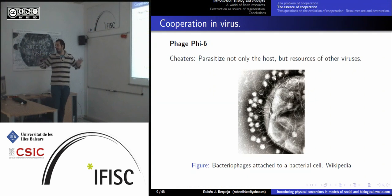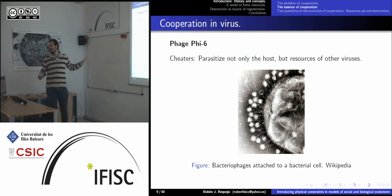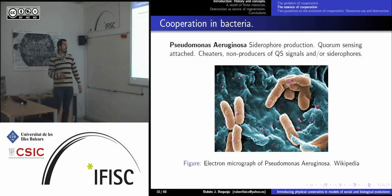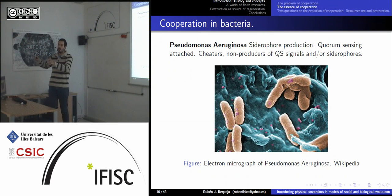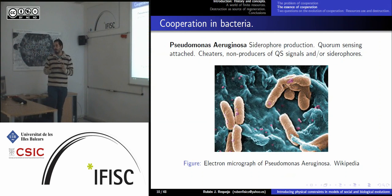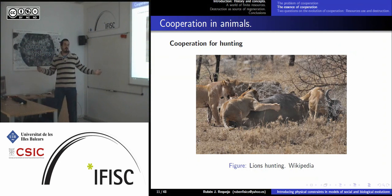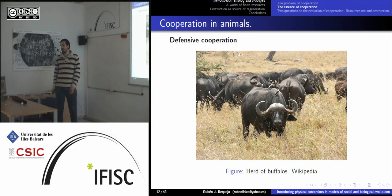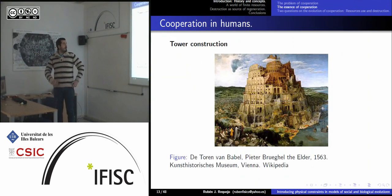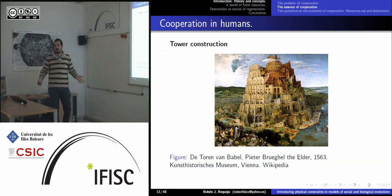Cooperation can be found at all levels of biological evolution — even in viruses, which cooperate or not to parasitize host cells; in bacteria, which cooperate to process external food; in cooperative hunting or cooperative defense against predators; and in humans, for instance to build structures or create social groups and movements.